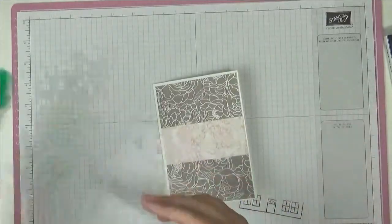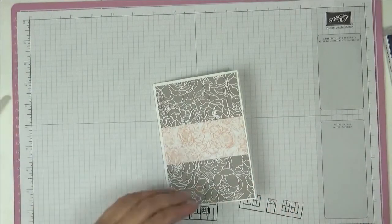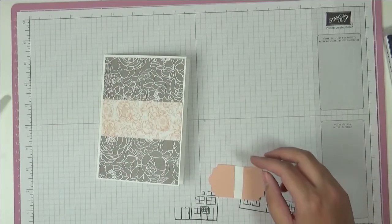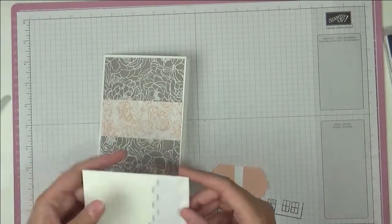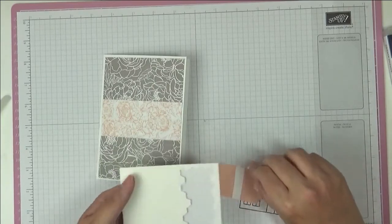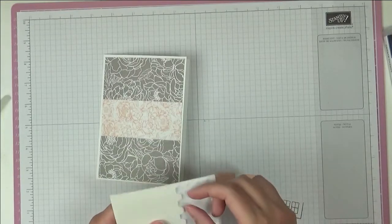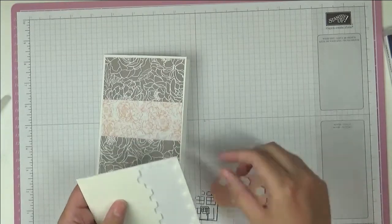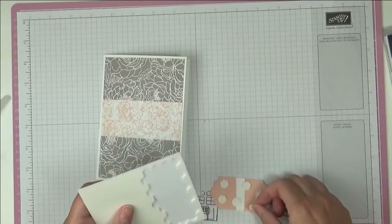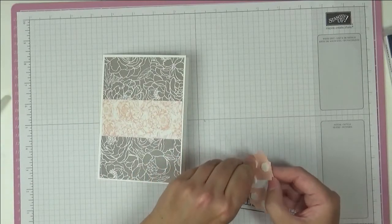We're nearly done. Bring back our sentiment and we are going to stick this up using some Dimensionals, so let's get those out. I usually try to put the Dimensionals across the seam as well just to give added strength to everything. And as you know, I'm usually quite generous with my Dimensionals, so I think that will do even for me.